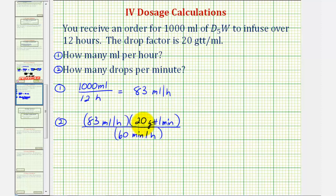Now whether we're doing this by hand or on the calculator, it's often helpful to simplify this first. Notice 20 and 60 share a common factor of 20. There's one 20 in 20 and three 20s in 60. So this is going to be equal to 83 divided by three drops per minute.